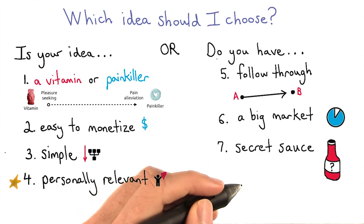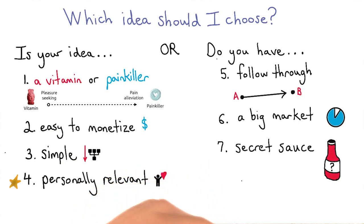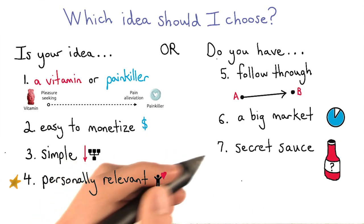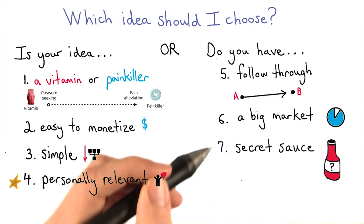For Google, the secret sauce was the page rank algorithm. The secret sauce has grown over the years to include many features that bring millions of page results in fractions of a second.